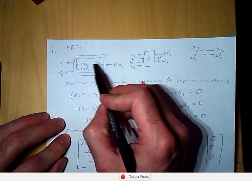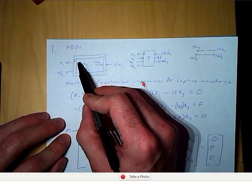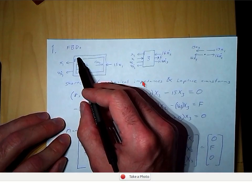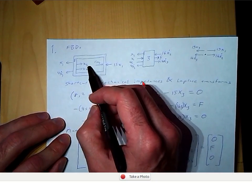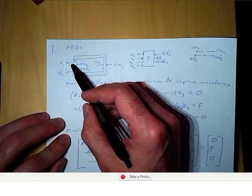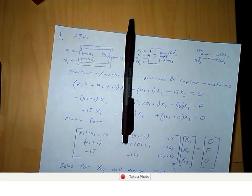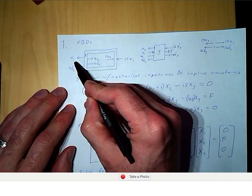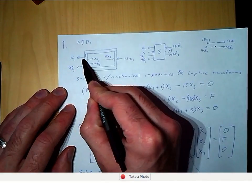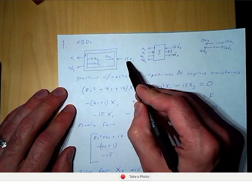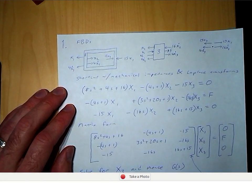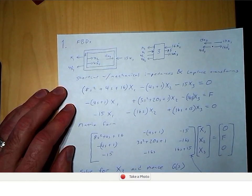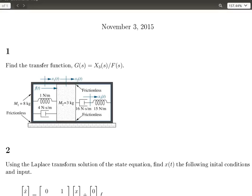We hold x2 and x3 constant, and then imagine the box x1 moving in the positive direction, and draw the forces associated with that. And so we'd have this spring force, the damper, and then the other spring.